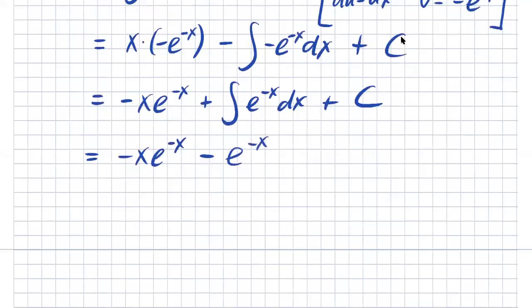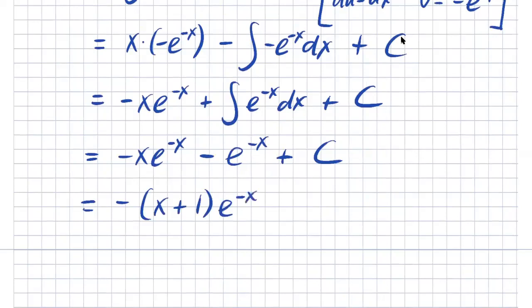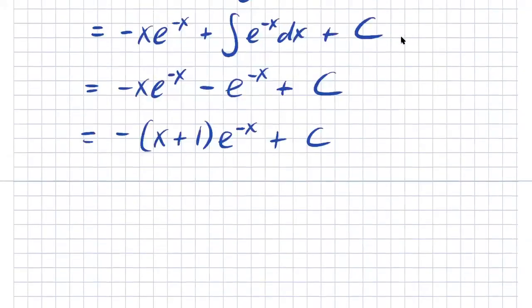Integrating e to the negative x gives negative e to the negative x. There are two common terms — factoring out gives: negative (x plus 1) times e to the negative x plus C. That is our general solution.